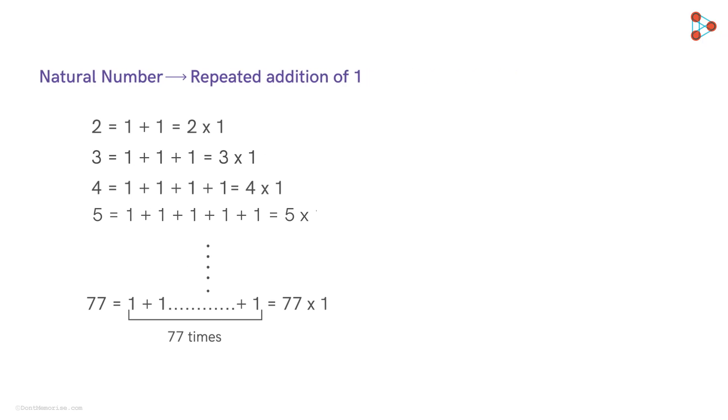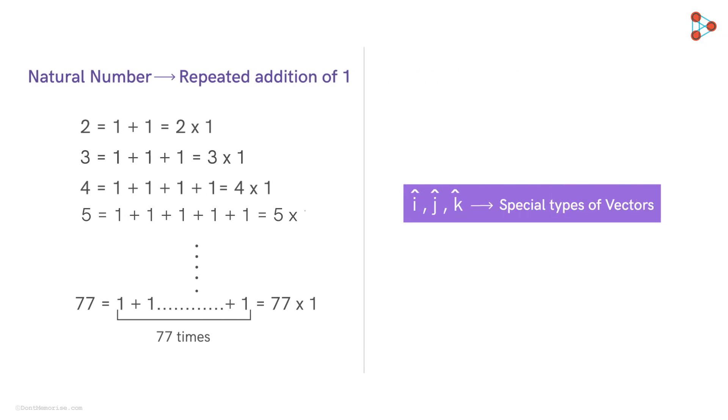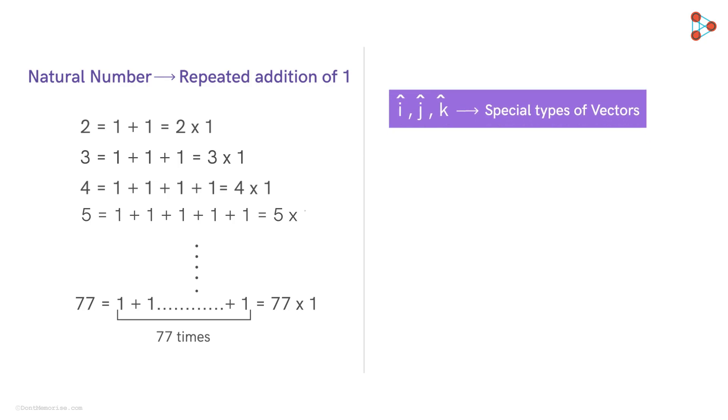Similarly for vectors, there exist some special vectors similar to the number 1. These vectors, i hat, j hat and k hat are some examples of them. In the three dimensional space, they act like the number 1 for different directions like this.